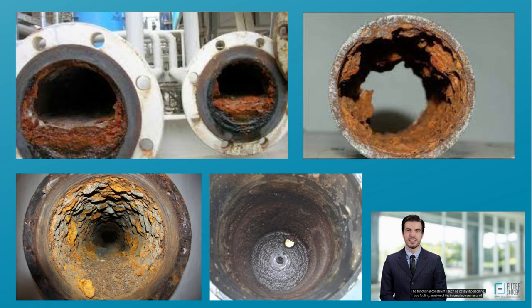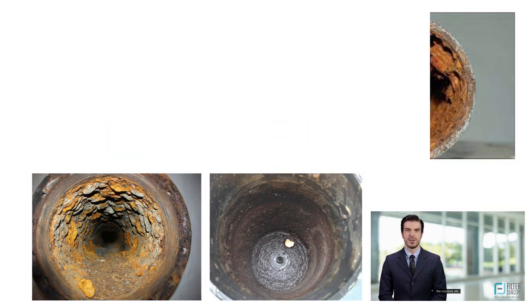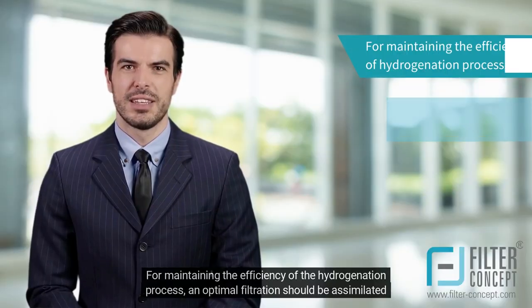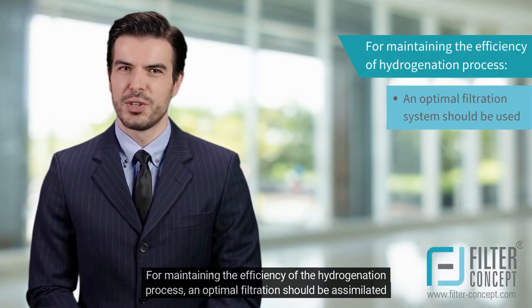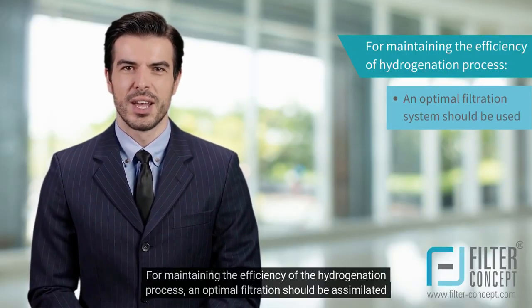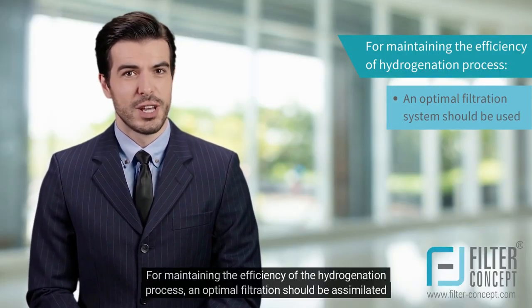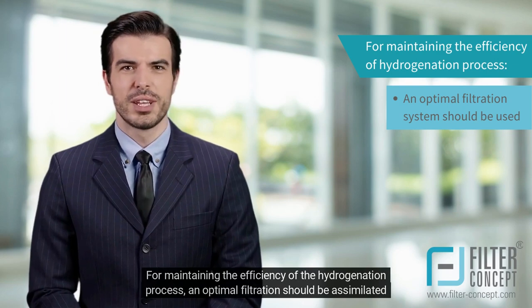Functional constraints such as catalyst poisoning, tray fouling, and erosion of the internal components of the reactors must be addressed. For maintaining the efficiency of the hydrogenation process, an optimal filtration system should be assimilated to overcome these constraints.